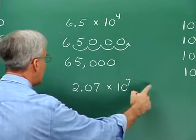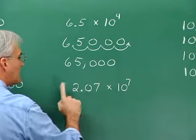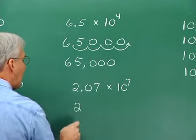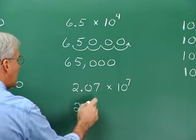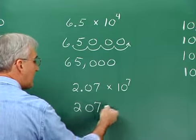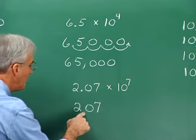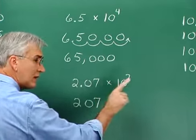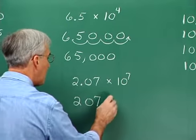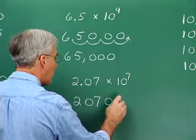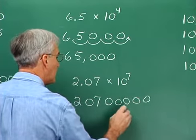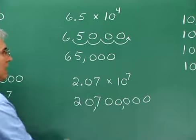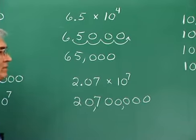The same idea applies to 2.07 times ten to the seventh — we're just taking this decimal and sliding it seven to the right. We have the digits 2, then zero, then 7, and we follow with zeros. Moving the decimal point seven to the right: one, two, three, four, five, six, seven. We add commas to get the expanded form of the number.